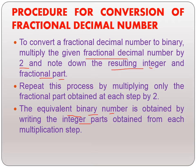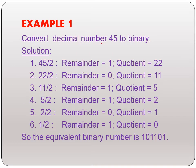Let us see an example: converting decimal number 45 into binary. We have the decimal integer part, and to convert it we divide by 2 until the quotient is 0. Now let us start. We divide 45 by 2. Remember to note down the remainder, because the remainders will form your binary number.